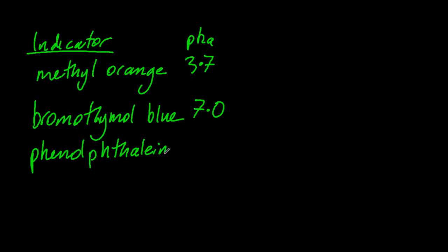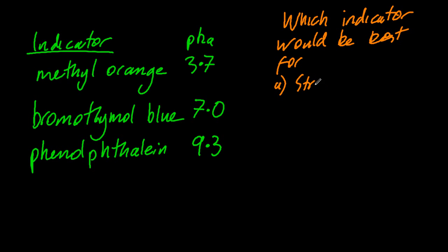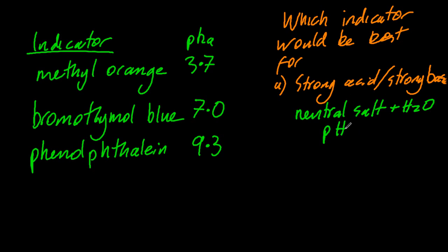Here are three indicators and the pKa of the indicators. So what indicator would I use for a strong acid and strong base reaction? Well, that's going to finish at pH 7, so I want my indicator to have a pKa of 7. That's bromothymol blue. I want it to finish at 7, so the pKa of my indicator should be 7.